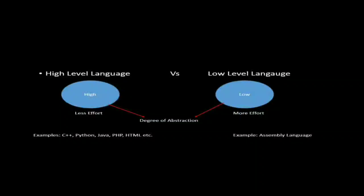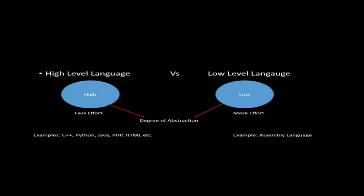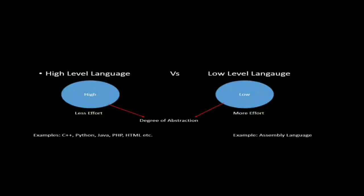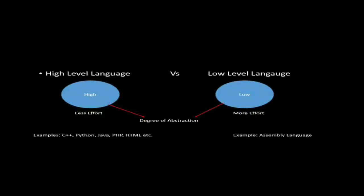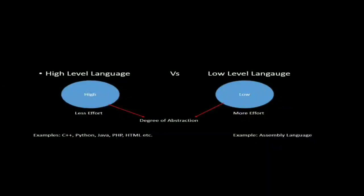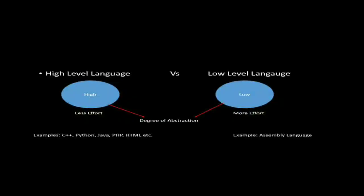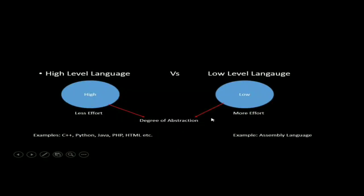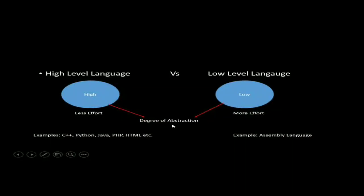High-level language uses basic English and normal words. Low-level language uses low-level commands like sub, register instructions — these are internal machine language and assembly language. High-level language has a high degree of abstraction from the hardware.